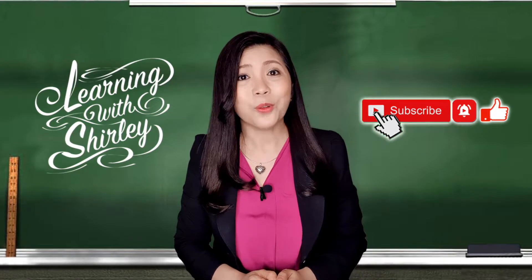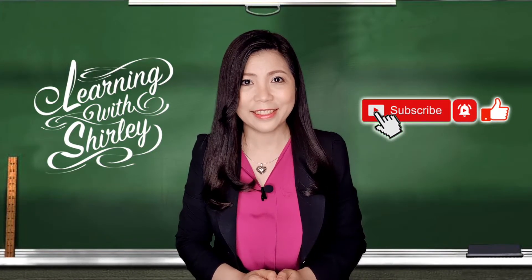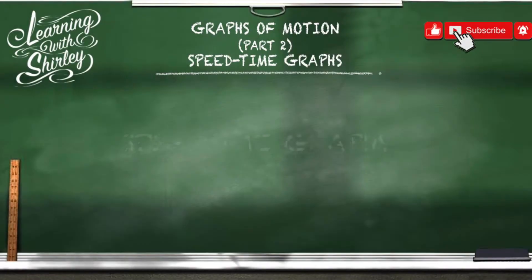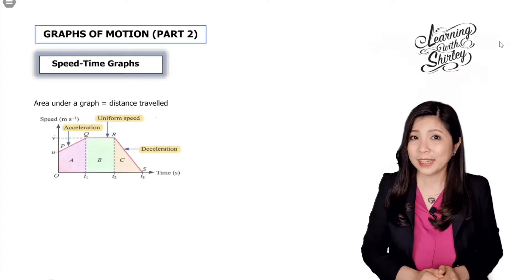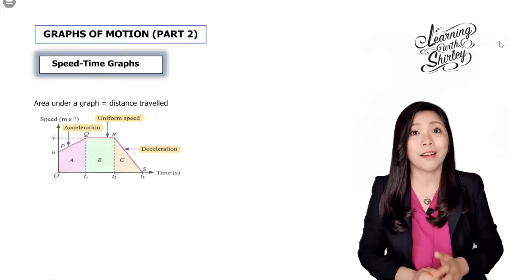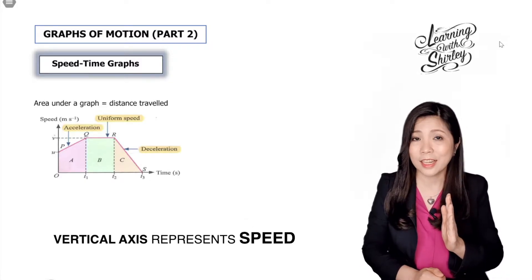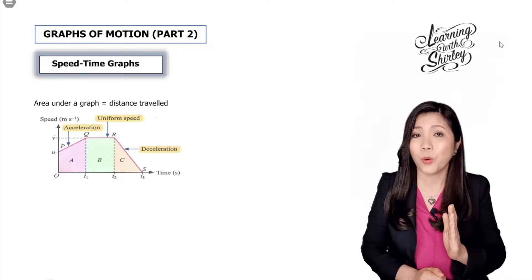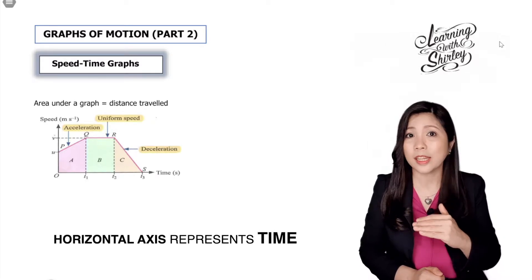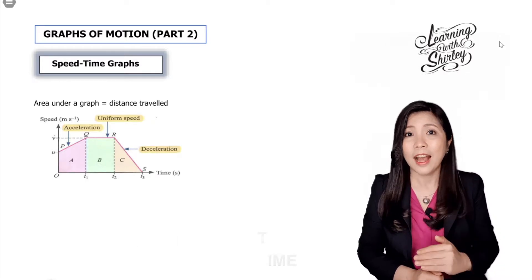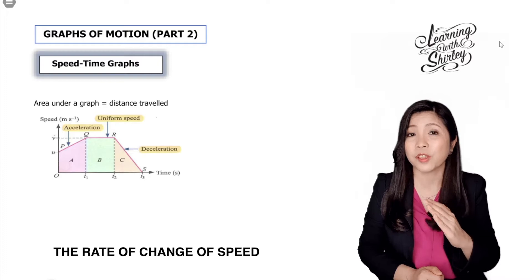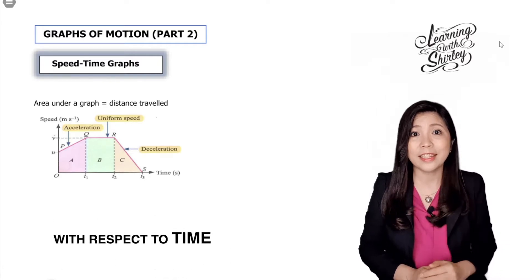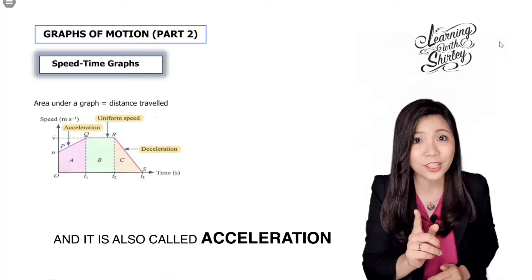Let's take a look at what a speed-time graph is. For the speed-time graph, we have two axes: the vertical axis represents the speed, whereas the horizontal axis represents the time. The gradient of the graph represents the rate of change of speed with respect to time, and it is also called acceleration.